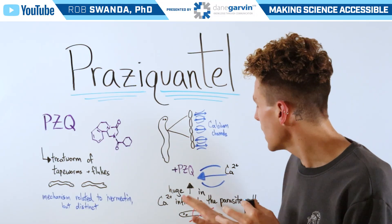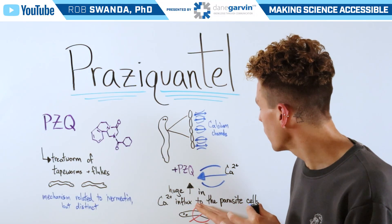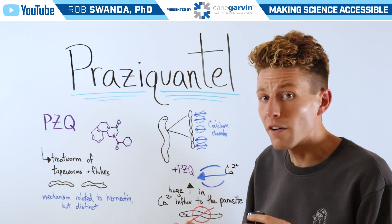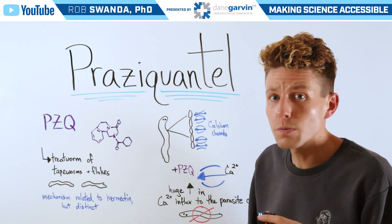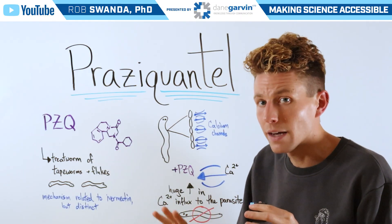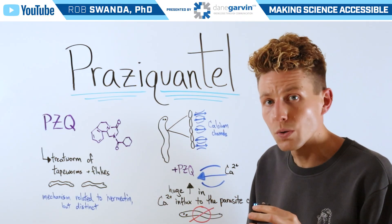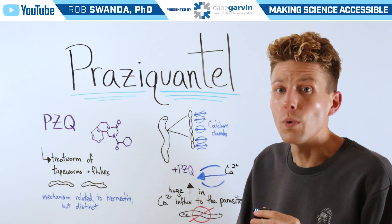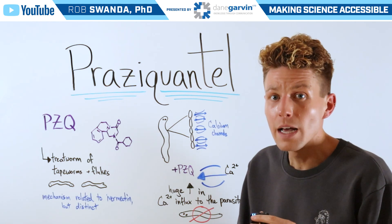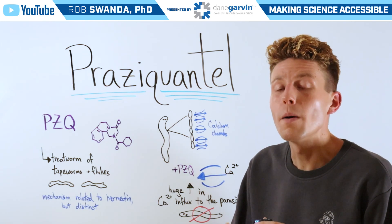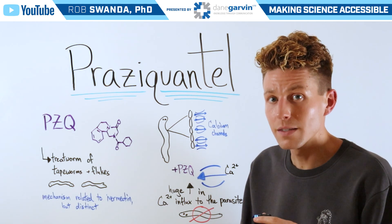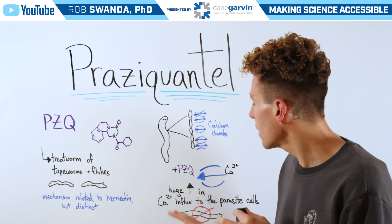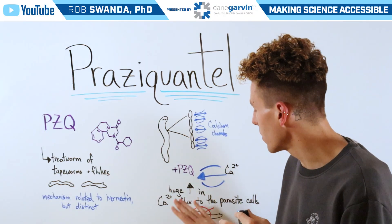That huge increase in calcium influx into the parasite's cells affects all of those processes that calcium is associated with, but primarily movement, leading to paralysis and eventually cell death of the parasite.